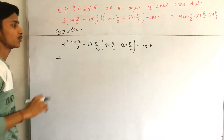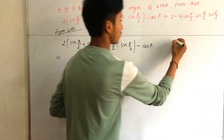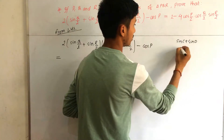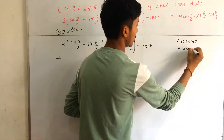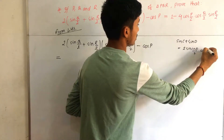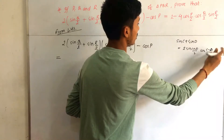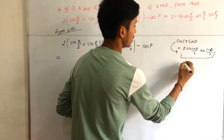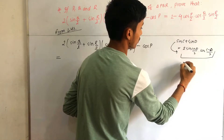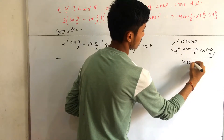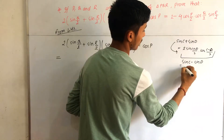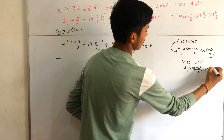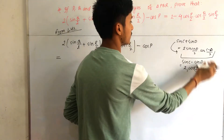In the next step we will use the formula of sin C + sin D. The formula is: sin C + sin D = 2·sin((C+D)/2)·cos((C-D)/2). And sin C - sin D = 2·cos((C+D)/2)·sin((C-D)/2), which is just the inverse of this. We use these two formulas to solve this question.